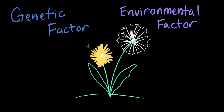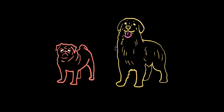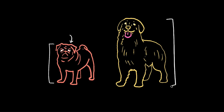But plants aren't the only living organisms that are influenced by these factors. Animals are also influenced by their genes and environment. For example, let's look at dogs. Dogs come in many different shapes, sizes, and colors, and each have their own unique features. We can see this when looking at different breeds, like pugs, which are small with squishy faces, and golden retrievers, which are large with flowing locks of golden fur.